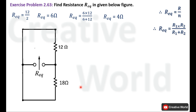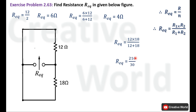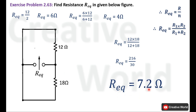The circuit is now simplified. These two remaining resistances are in parallel connection, and their R equivalent equals the total circuit R equivalent. R1 is 12 Ohm and R2 is 18 Ohm. Product of 12 and 18 is 216, divided by their sum of 30. Dividing 216 by 30 gives R equivalent of 7.2 Ohm.